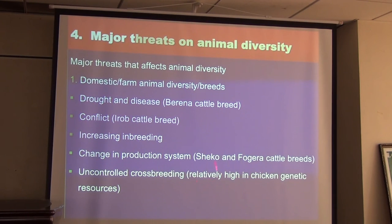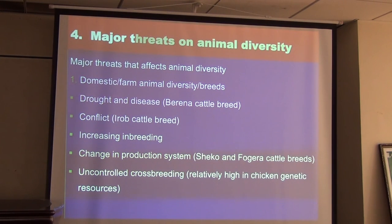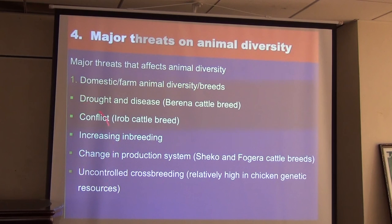Changing production systems are affecting Sheko and Fogera cattle breeds, as previously extensive grazing land is being encroached upon by agriculture, causing people to reduce animal numbers — making these considered threatened breeds. Uncontrolled crossbreeding is another major threat — while the objective is to improve productivity, uncontrolled crossbreeding causes dilution of diverse indigenous genetic resources. This is very serious in chicken genetic resources, but also applies to cattle.